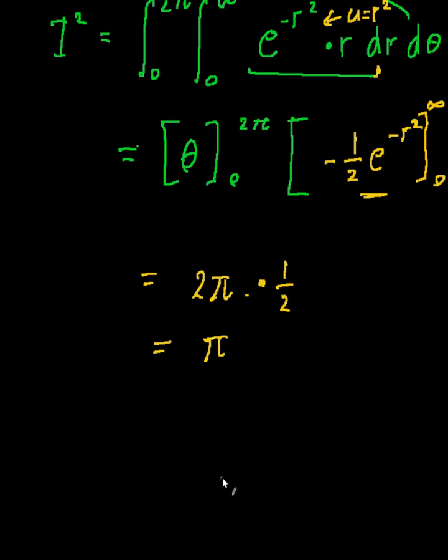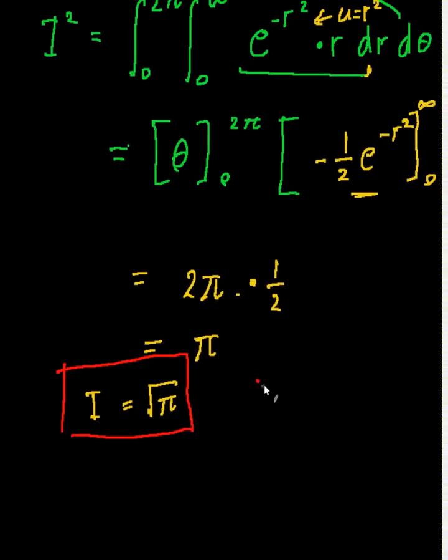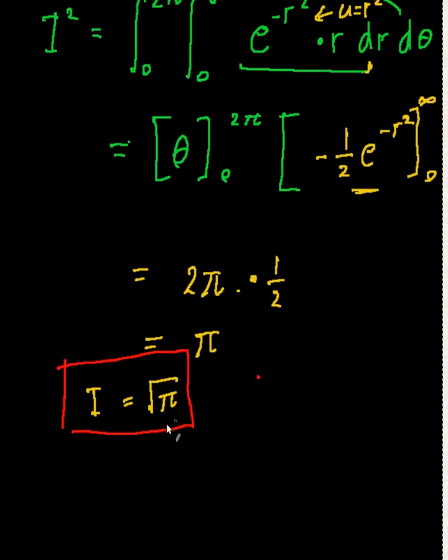And so the last step will end up being, I is equal to root pi, and there you have it. Okay, so the integral of e to the minus x squared is simply equal to root pi. If you have any questions or comments, please let me know, but I hope that was pretty straightforward, and thanks for watching.